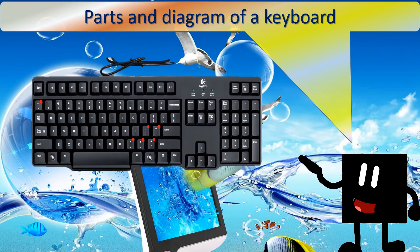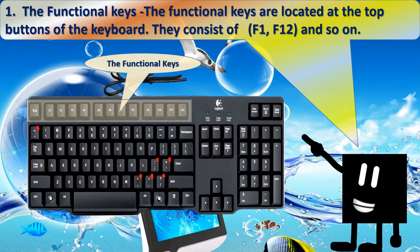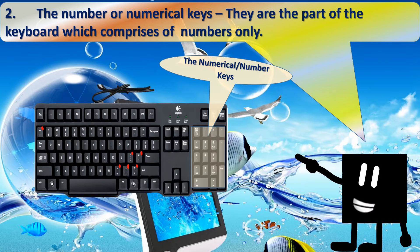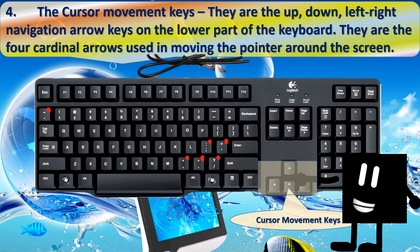Parts and diagram of a keyboard: there are five major parts of a keyboard. 1. The function keys — located at the top of the keyboard, they consist of F1 to F12. 2. The numerical keys — the part of the keyboard which comprises numbers only. 3. The alphanumerical keys — the part of the keyboard which consists of both alphabets and numbers together. 4. The cursor movement keys — these are the up, down, left, right navigation arrow keys on the lower part of the keyboard.